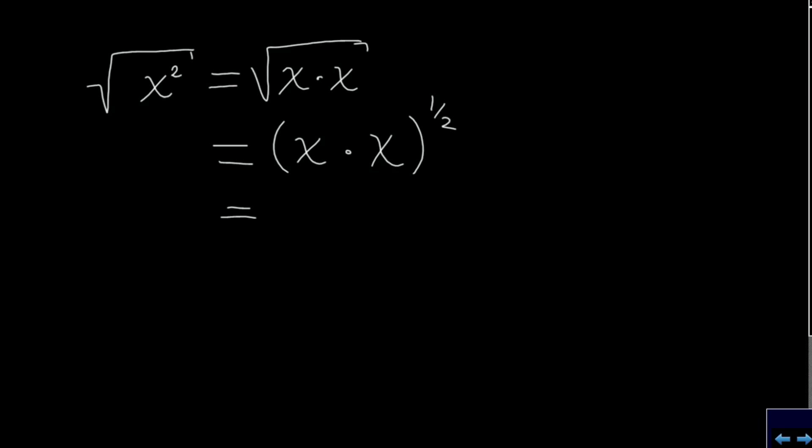By the rules of calculation for power functions, we can rewrite this as x to the power a half times x to the power a half.